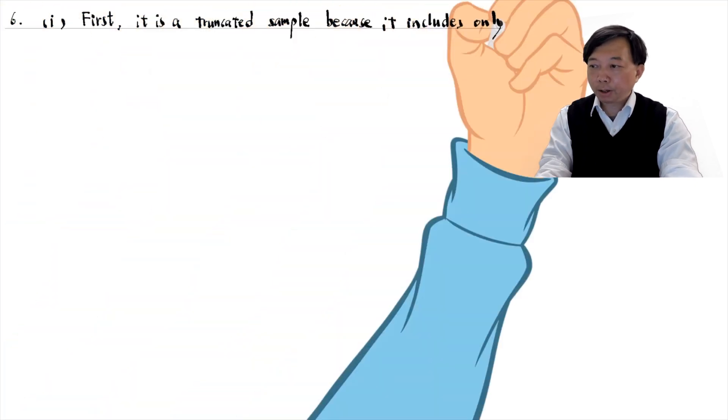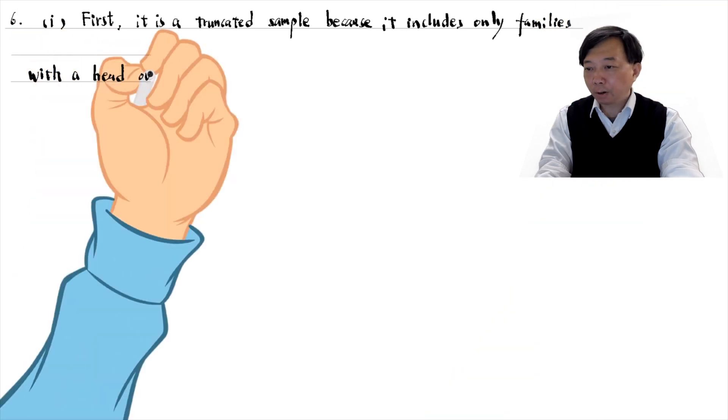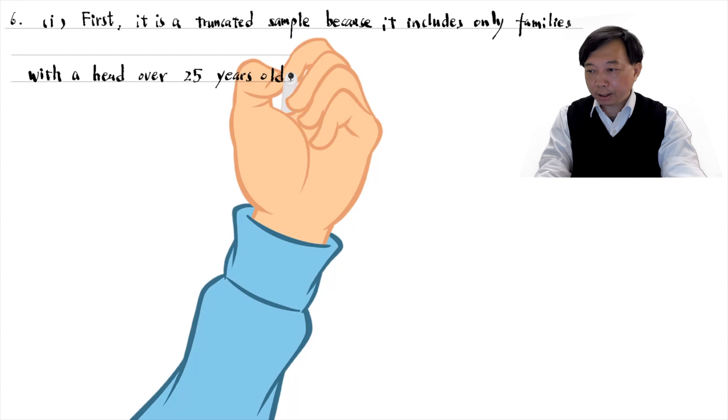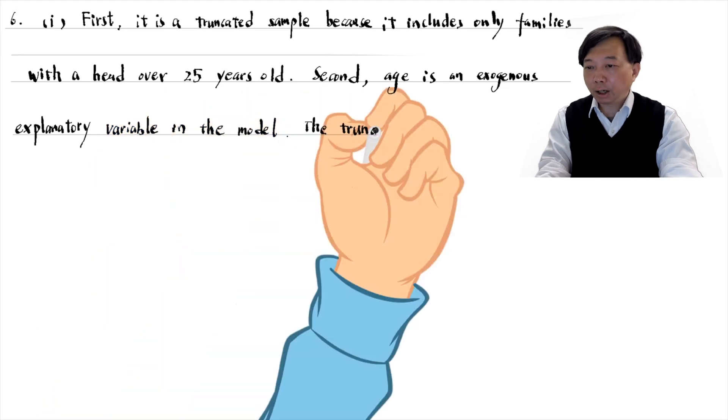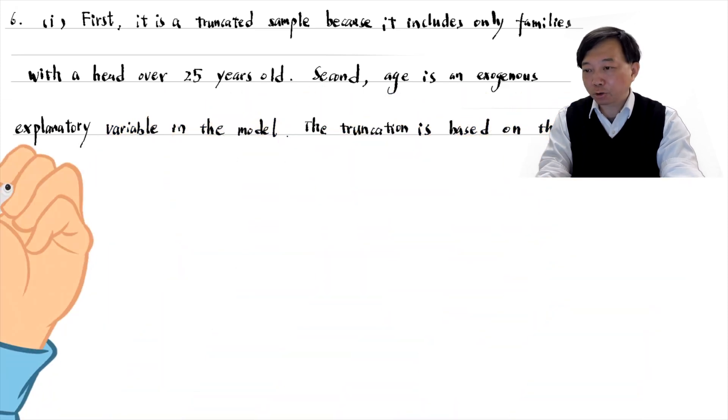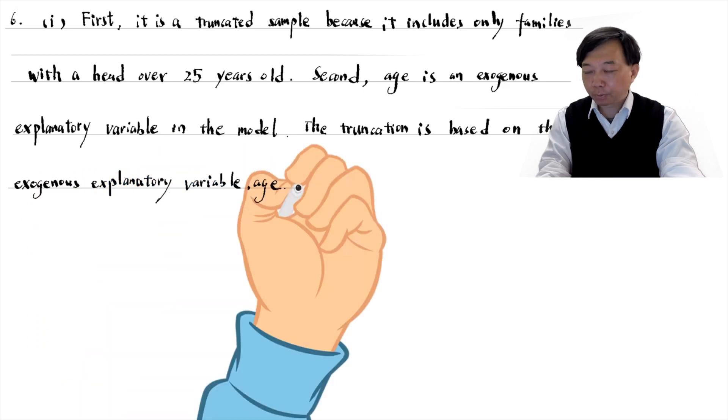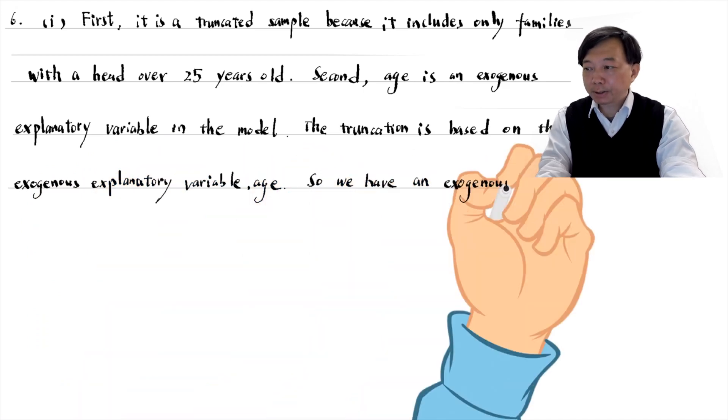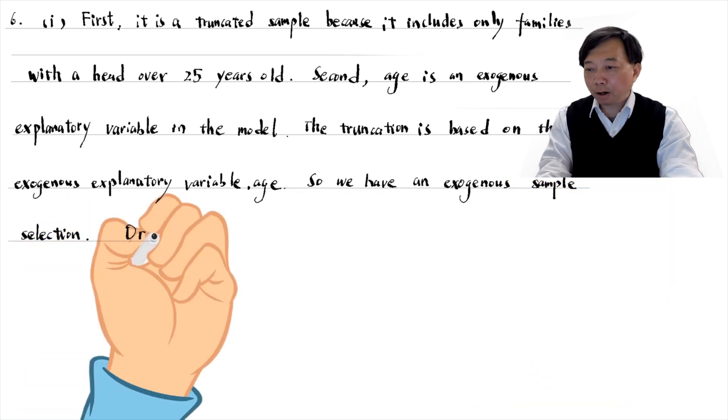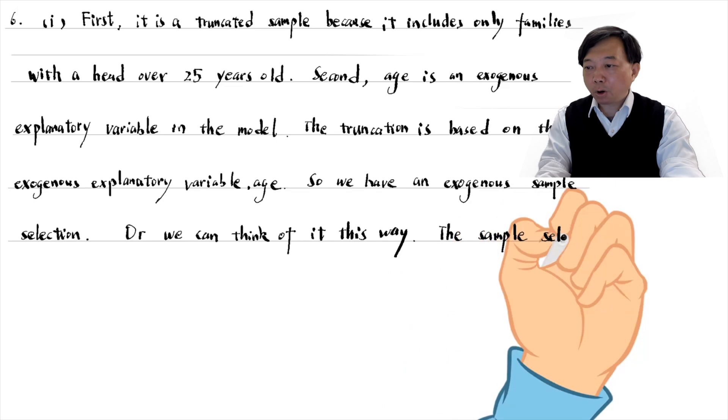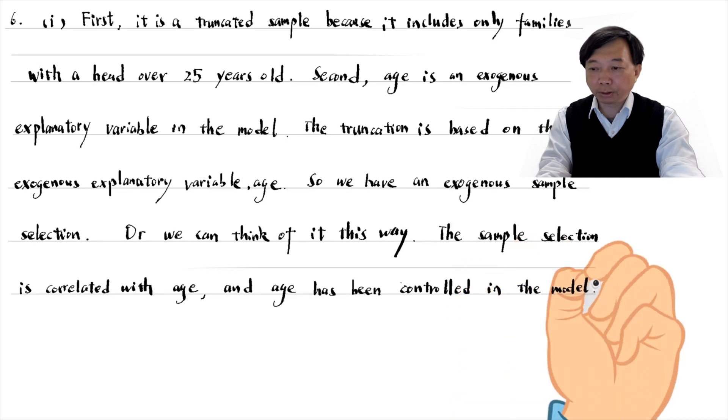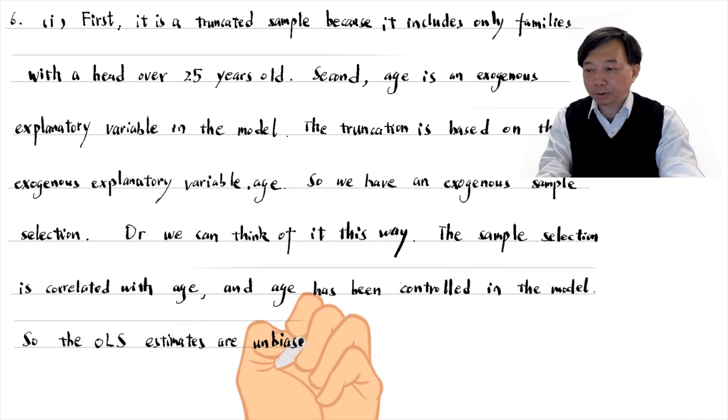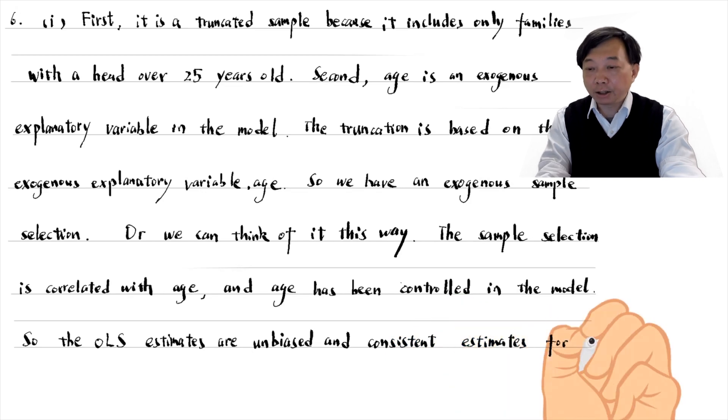First, it is a truncated sample because it includes only families with a head over 25 years old. Second, age is an exogenous explanatory variable in the model. The truncation is based on the exogenous explanatory variable age. So, we have an exogenous sample selection. Or we can think of it this way. The sample selection is correlated with age and age has been controlled in the model. So, the OLS estimates are unbiased and consistent estimates for the entire population.